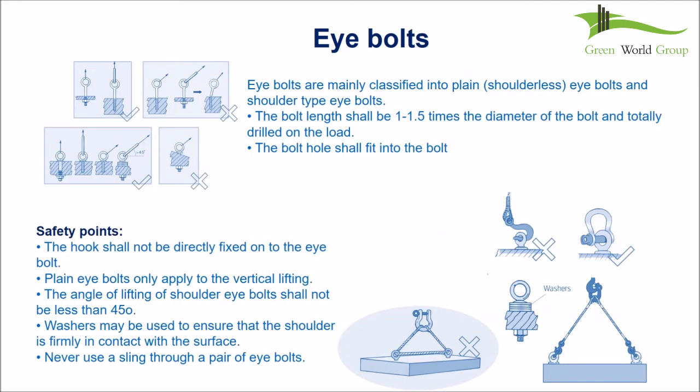Eye bolts are mainly classified into plain shoulderless eye bolts and shoulder-type eye bolts. The bolt length shall be 1 to 1.5 times the diameter of the bolt and totally engaged in the load. The bolt hole shall fit the bolt. Safety points: the hook shall not be directly fixed onto the eye bolt; plain eye bolts only apply to vertical lifting; the angle of lifting of shoulder eye bolts shall not be less than 45°; washers may be used to ensure the shoulder is firmly in contact with the surface; never use a sling through a pair of eye bolts.